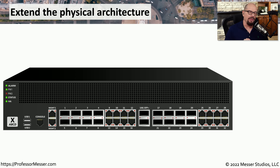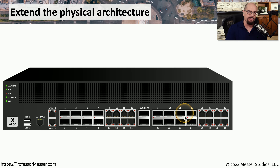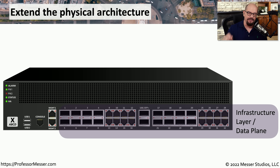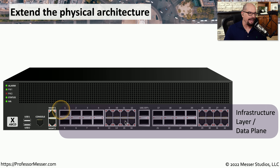Let's see how software-defined networking would apply to a physical device. In this case, this physical device appears to be a switch, but this could be a router, firewall, or any other infrastructure device. Let's start first with that infrastructure layer or the data plane. If you're connecting to a switch or need traffic forwarded between different interfaces on a switch, that all occurs in that data plane. We'll take anything that may be forwarding this traffic on that device and create a software version of that, which we call the data plane.